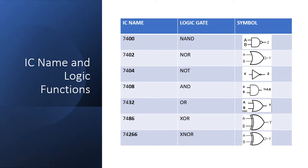Each IC is named starting with 74, which is common for almost all ICs. The remaining two digits determine which logic gate or operation the IC performs. 7400 performs NAND, 7402 performs NOR, 7404 performs NOT, 7408 performs AND, 7432 performs OR, 7486 performs XOR, and 74266 performs XNOR. The last two numbers determine the logic operation the IC is designed to perform.